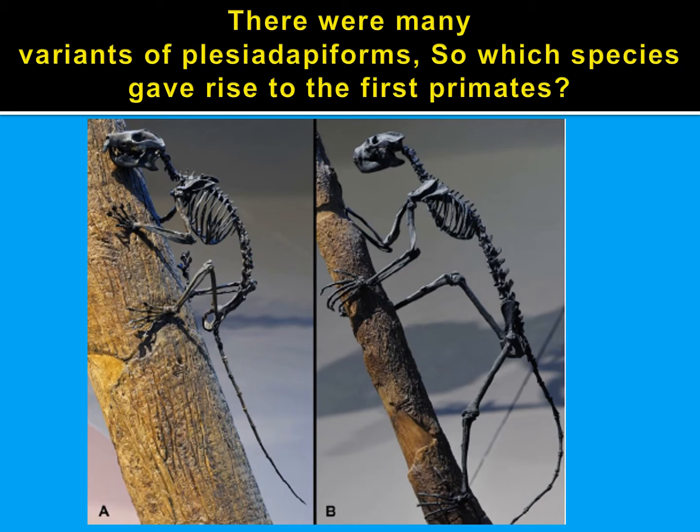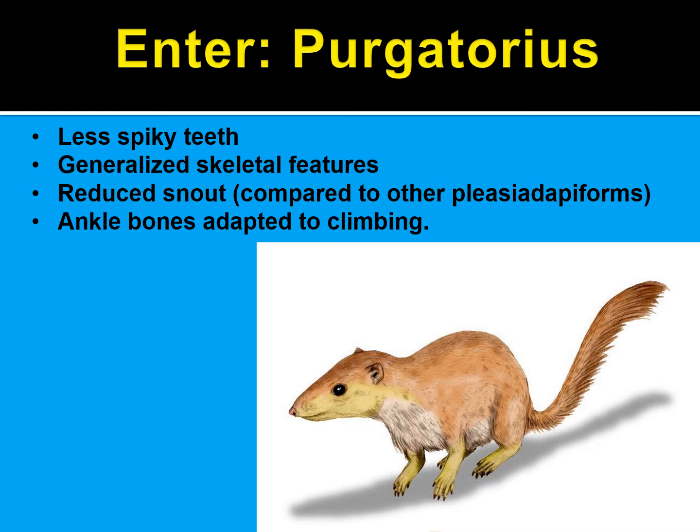The dental formula for some Plesiadapiforms was 2-1-3-3, which is what we see in our earliest prosimians as well. There were many variants of Plesiadapiforms, so we're not really sure whether one of these species gave rise to our earliest primates. As stated at the beginning, this is a huge murky area in terms of what we know about early primate evolution.